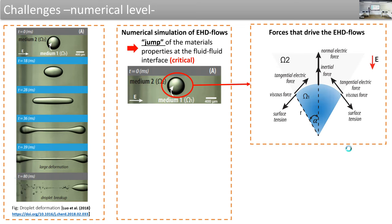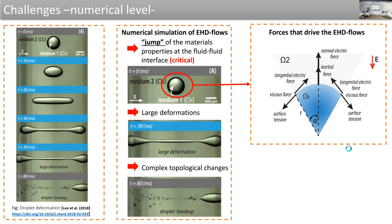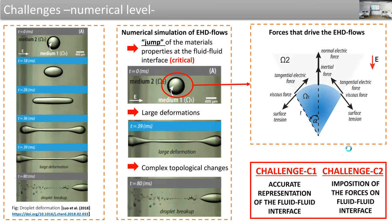The first complexity comes from the nature of the problem: we are dealing with two different materials, meaning there is an interface — a jump between material properties. This mismatch between material properties is very critical and drives the forces. Another complexity comes from large deformation and complex topological changes, including breakup of the fluid domain. Summarizing, the challenges are: the correct representation of the fluid-fluid interface, and the imposition of forces at that interface.